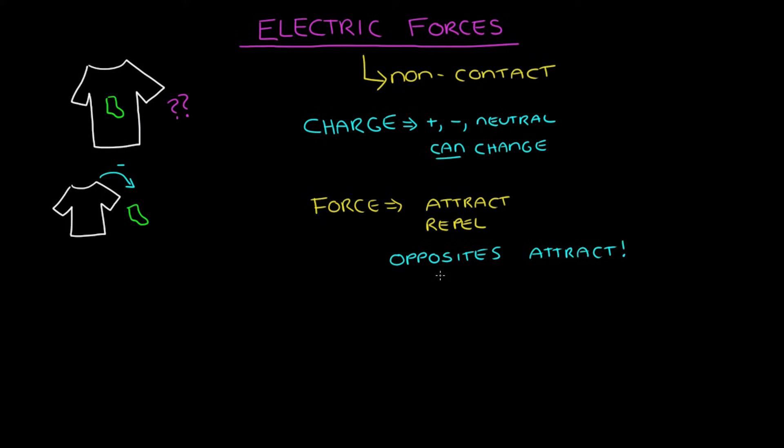An object with a negative electric charge will be attracted to a positively charged object. If the second object is also negatively charged, well, the two objects will experience a repulsive force and be repelled from each other. So, in order to have the sock and the shirt attracted to each other, they must have opposite net charges because they're experiencing an attractive electric force.